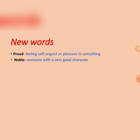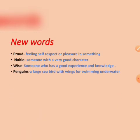Sentence: Mother Teresa was a noble lady. 'Wise' — W-I-S-E — someone who has good experience and knowledge. Sentence: Samrat Ashoka was a wise king. 'Penguins' — P-E-N-G-U-I-N-S — a large seabird with wings for swimming underwater. Sentence: She was dancing like a penguin.